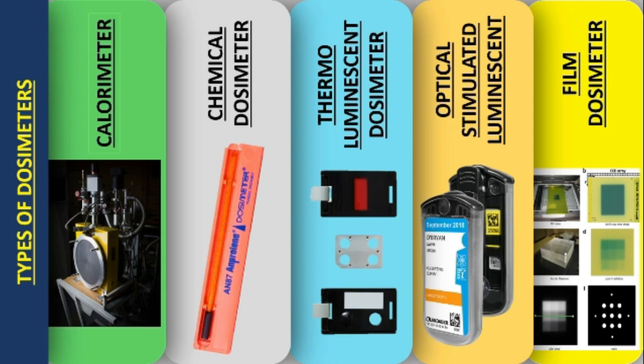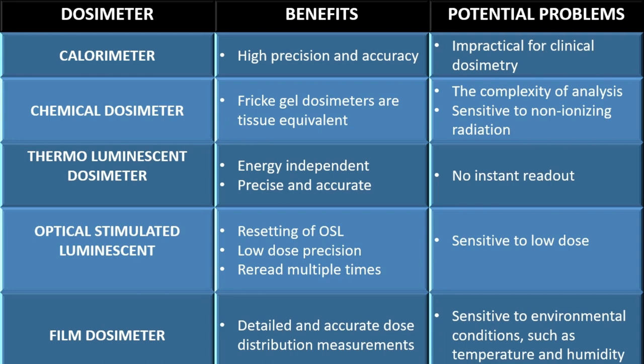All of these dosimeters have some positive and negative points. The calorimeter is precise and accurate for measuring absorbed dose, but it is not suitable for routine use in a clinical setting. The material in a chemical dosimeter is tissue equivalent, but it is also sensitive to non-ionizing radiation. Both the calorimeter and chemical dosimeter are time-consuming and require sophisticated equipment.